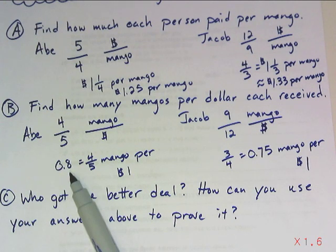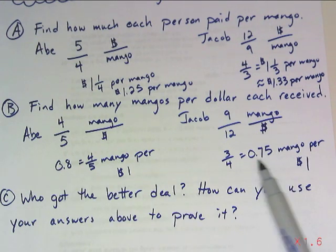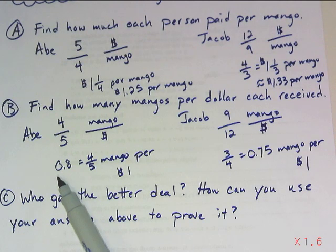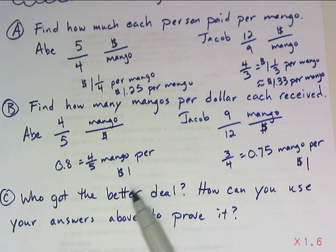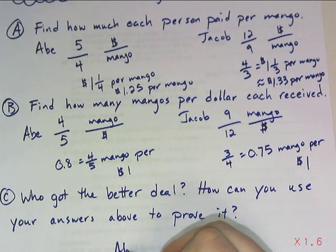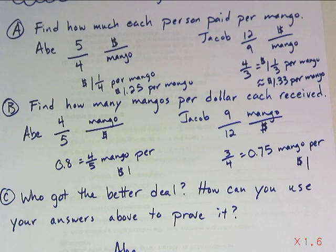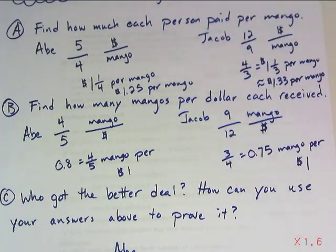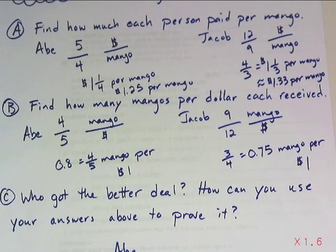Abe still got the better deal according to letter B, because he got more mango for each dollar. He got 0.8 compared to 0.75, and 0.8 is a larger number. So since he got more mango per dollar, he got a better deal. So either way, the answer you got should be A. But you need to make sure you understand how to use both of the different types of unit rates in order to back up that answer.